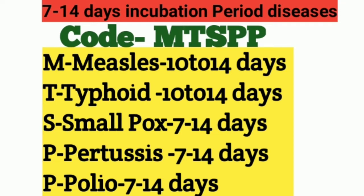The mnemonic for the 7 to 14 day incubation period group is 'MTSP2.' M stands for Measles: 10 to 14 days. T stands for Typhoid: 10 to 14 days. S stands for Smallpox: 7 to 14 days. P stands for Pertussis: 7 to 14 days. P2 stands for Polio: 7 to 14 days.